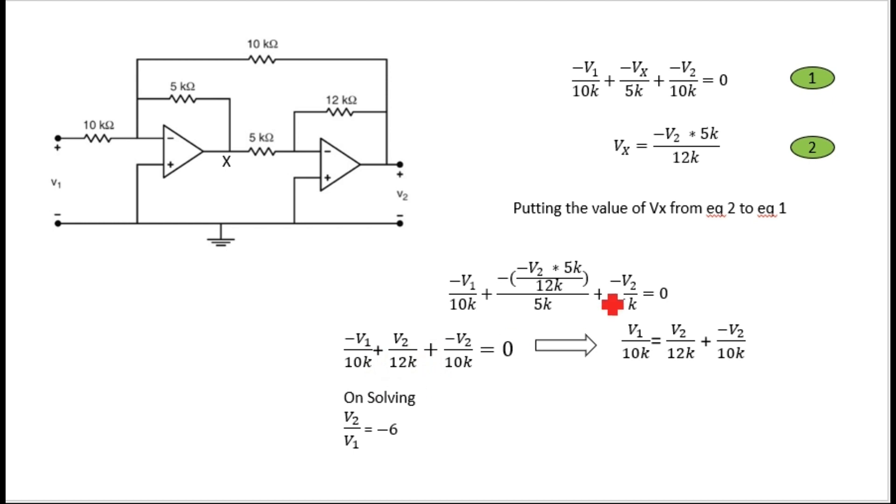When we solve this, minus V1 divided by 10k plus V2 divided by 12k, because 5k was cancelled out, plus minus V2 by 10k. On solving, V2 by V1 equals minus 6 volts. So this is your final answer.